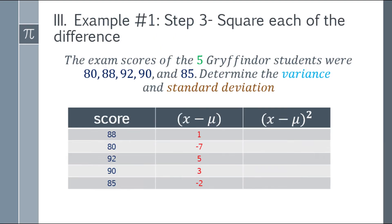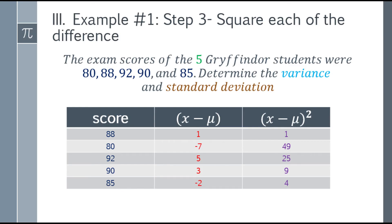Now, step 3, we need to square each of the difference. So the square of 1 is 1. Negative 7, when squared, that will be 49. And 5, when squared, that will be 25. And 3, when squared, that will be 9. And negative 2, when squared, that will be 4.